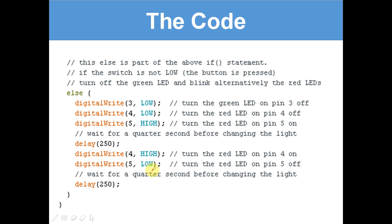This else is part of the above if statement. If the switch is not LOW, the button is pressed. Turn off the green LED and blink alternatively the red LEDs. So else - if the button is pressed, digitalWrite 3 LOW turns the green LED on pin 3 off. And then digitalWrite 4 LOW. Now that's supposed to say yellow.